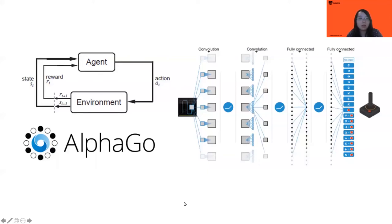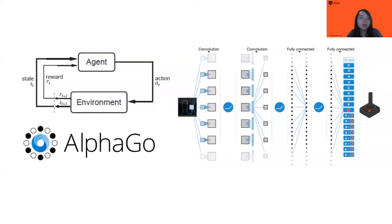Here is a simple structure of reinforcement learning. The input image is the environment — each time the agent takes the environment as the current state, and picks an action such as going forward or turning left. This action changes the environment slightly, and then the environment refreshes its state and gives a reward signal indicating whether the action was good or not. This is a simple explanation of reinforcement learning.